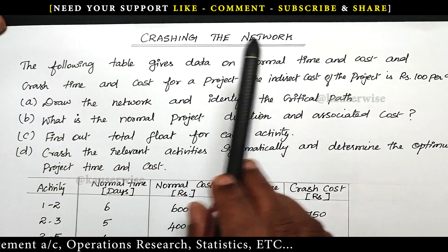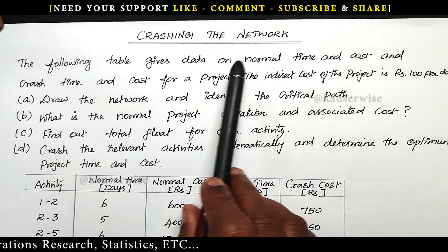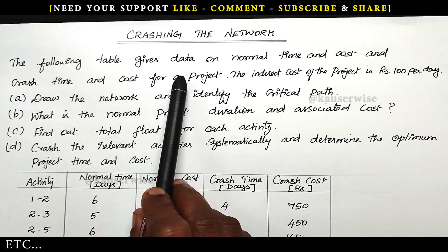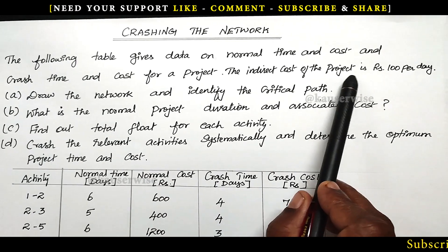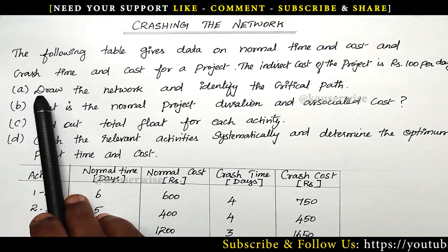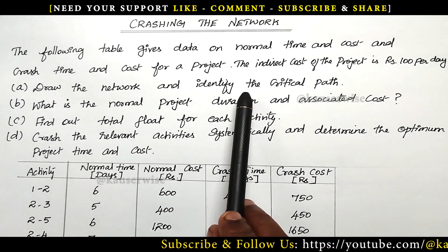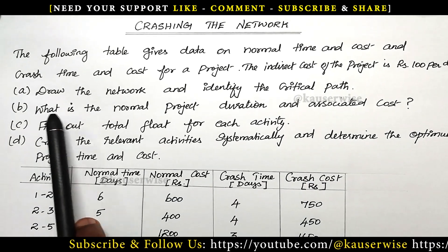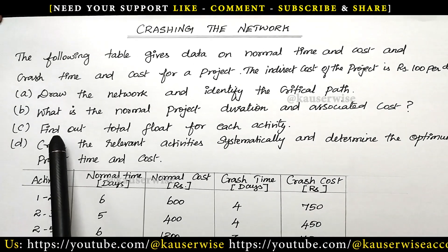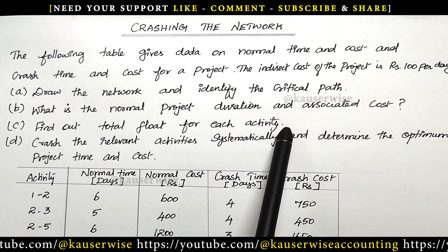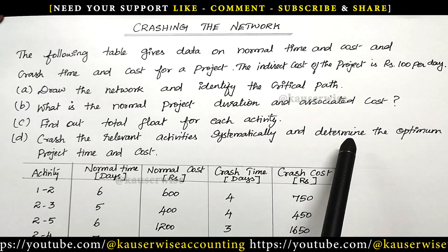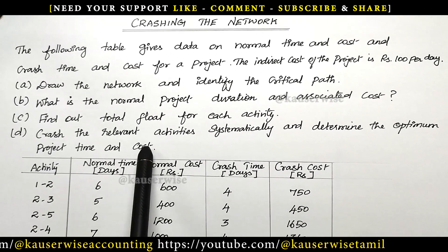See the problem: crashing the network. The following table gives data on normal time and cost and crash time and cost for a project. The indirect cost of the project is 100 rupees per day. With this information, they are asking us to: number 1, draw the network and identify the critical path; number 2, what is the normal project duration and associated cost; and number 3, find out total float for each activity.